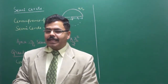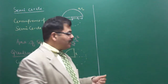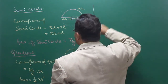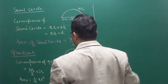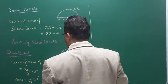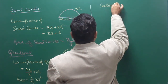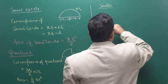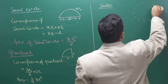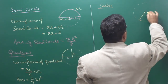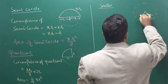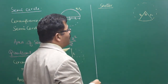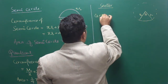Welcome back. We are going to discuss more about quadrants. After quadrants, we can calculate sectors. A sector is a part of a circle — this part here is called a sector. This is the radius, and this is the radius that makes angle theta. So in that case, what will be the circumference of the sector?